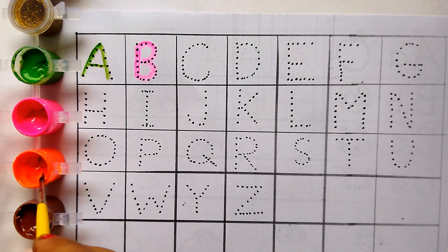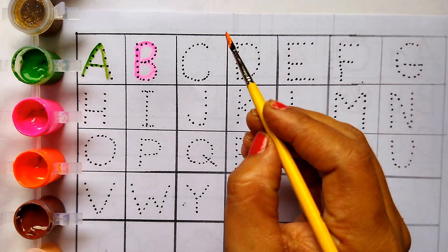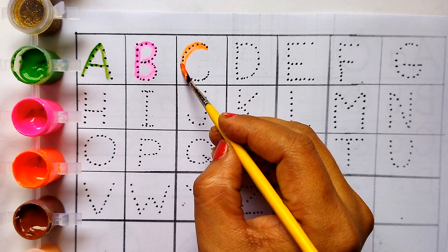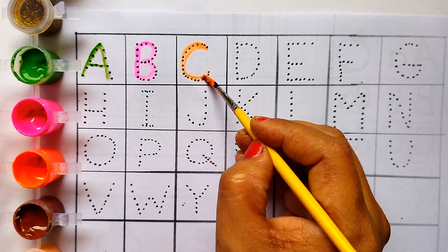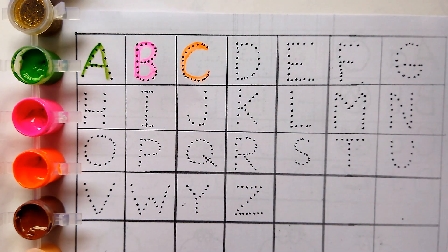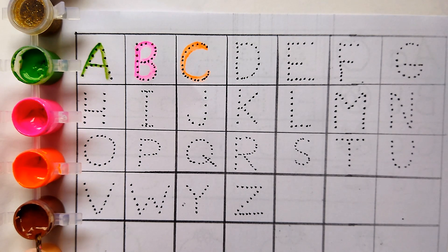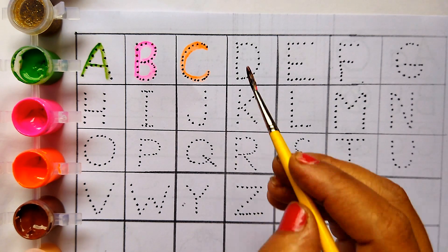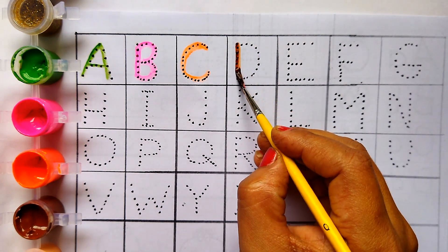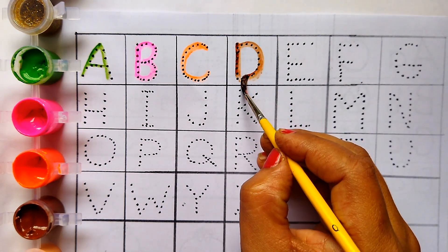Orange colour C. C for cat. Brown colour D. D for dog.